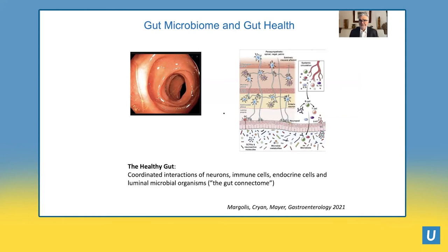The coordinated interactions of these multiple cell types — all of which have the ability to communicate with each other and beyond the gut — also interact with the microorganisms in the lumen, the microbiome, and set up a very complex system that can lead to major dysregulations of motility, secretion, and blood flow, going way beyond the gut lining.